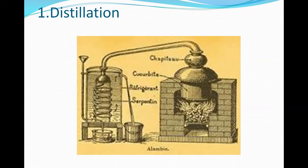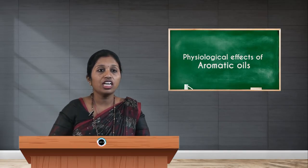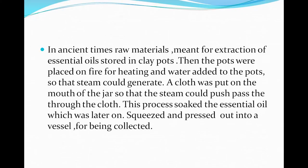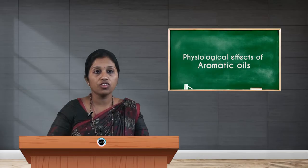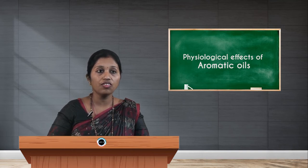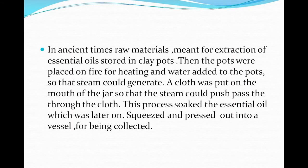This is a depiction of the distillation method. In ancient times, raw material meant for extraction of essential oils was stored in a clay pot. The pot was placed on fire for heating. In this pot, they used to keep the plant material — flowers, roots, everything — and heat it, adding water so that steam could be generated. A cloth was put on the mouth of the jar so that the steam could pass through the cloth.